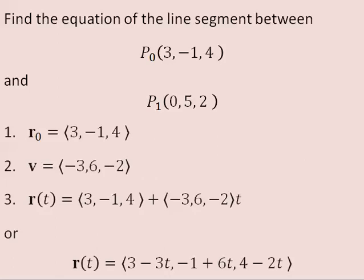Putting these two things together, the parameterization of the line is equal to r-naught plus v times the parameter t.